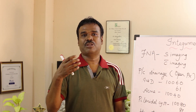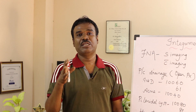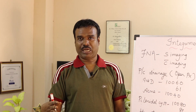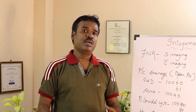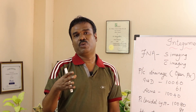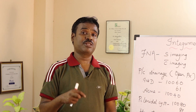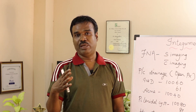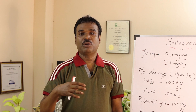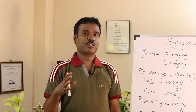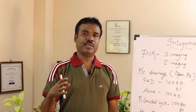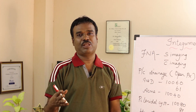You also need to code for the number of times or number of lesions being aspirated — whether it is for the first lesion or the second lesion. For example, if the physician performs a fine needle aspiration with CT guidance on two lesions, you would code 10005 for the first lesion and 10006 for the second lesion.